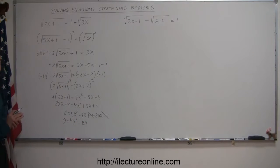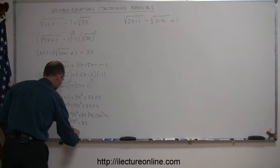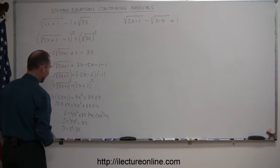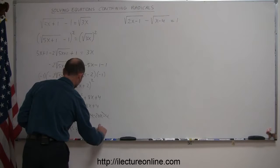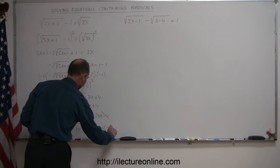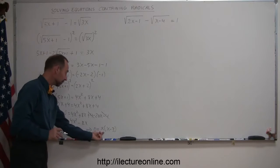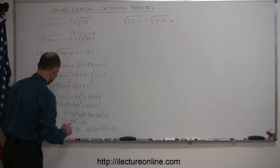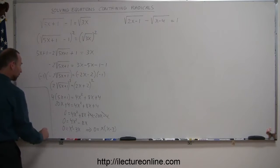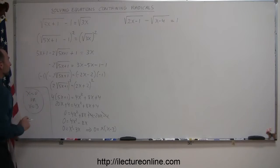It looks like I can divide both sides by 4, giving 0 equals x squared minus 3x. Factoring out an x, I get 0 equals x times x minus 3. That can only be true if either x equals 0 or x minus 3 equals 0, which means x equals 0 or x equals 3. Those are the two possible solutions.